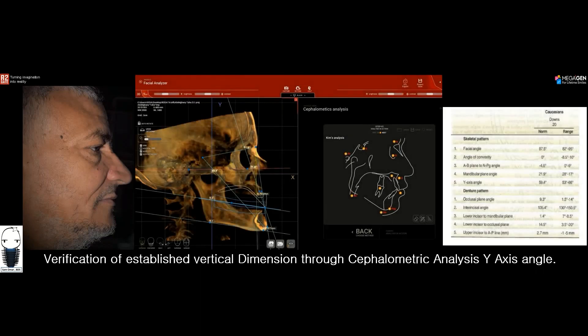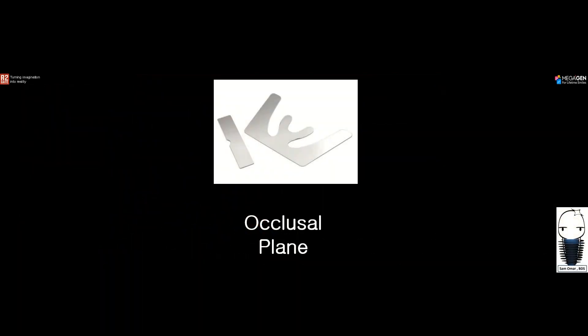Can we verify how correct the vertical dimension is that we set in the patient's mouth through cephalometric analysis? Yes. In the cephalometric analysis there is an angle called the y-axis angle. In Down's analysis this angle should be about 59 degrees. After you establish the vertical dimension, you can always verify its accuracy through that cephalometric analysis.